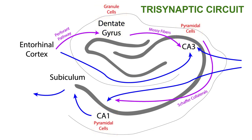The circuit begins with the axons of the perforant pathway, which go from the entorhinal cortex to the dentate gyrus, transmitting signals from the parahippocampal gyrus. The dentate gyrus then transmits signals to the pyramidal cells of CA3 via the mossy fibers. Finally, CA3 signals to the pyramidal cells of CA1 via Schaffer collaterals. So again, there are three parts of this circuit: synapse 1 from the entorhinal cortex to the dentate gyrus via the perforant pathway, synapse 2 from the dentate gyrus to CA3 via mossy fibers, and synapse 3 from CA3 to CA1 via Schaffer collaterals.